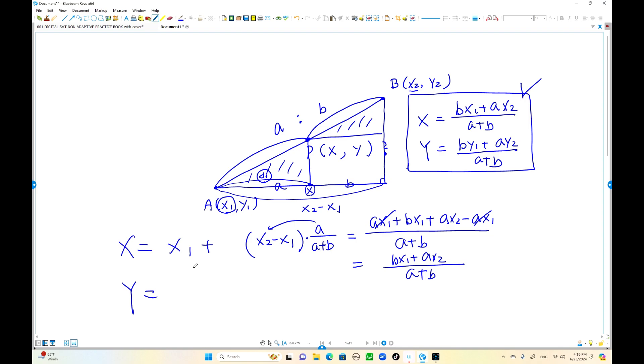Y is the same thing, replace with Y. Y1 plus Y2 minus Y1, that is the whole distance. We take only this one from here. Y1 add distance D2. This is D2, this is D1. Still A out of A plus B. When you simplify this one, you get the same thing. Just replace with Y. B y1 plus A y2. That is the Y coordinate. That's the formula.